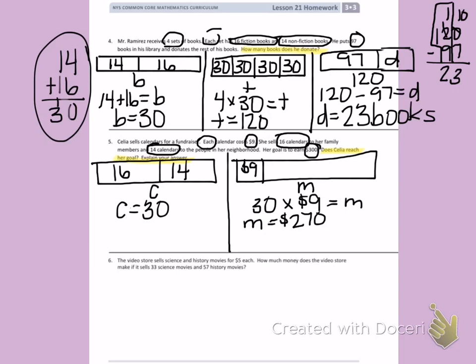Looking back at my question, does Celia reach her goal? Explain your answer. Her goal was $300. So Celia did not reach her goal.